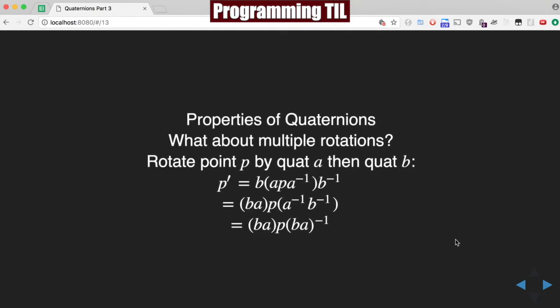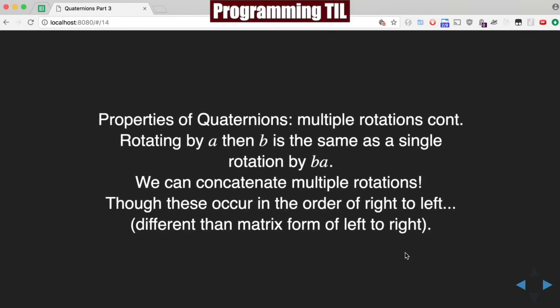So, what about multiple rotations? We can do the same thing, rotating around quaternion A and then quaternion B. So, we have A, P, A negative, or A inverse, and then around that, we have B and B inverse. Using the associative rule here, we have B, A, and you'll note that this negative 1, negative 1, could be put together. And then, so we have B, A, B, A negative 1. So, what do we notice? We notice that when you rotate around multiple rotations, like A and then B, it's the same thing. It's doing a single rotation by B, A. So, we can concatenate these multiple rotations, just like we do in matrices.